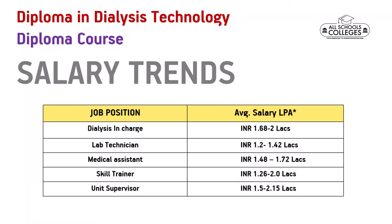Next, we go across the salary trends for different job profiles. If you become a dialysis in-charge, your salary could be INR 1.68 to 2 lakhs per annum. If you become a lab assistant, your salary could be 1.2 to 1.42 lakhs per annum. If you become a medical assistant, your salary could range from 1.48 to 1.72 lakhs per annum.